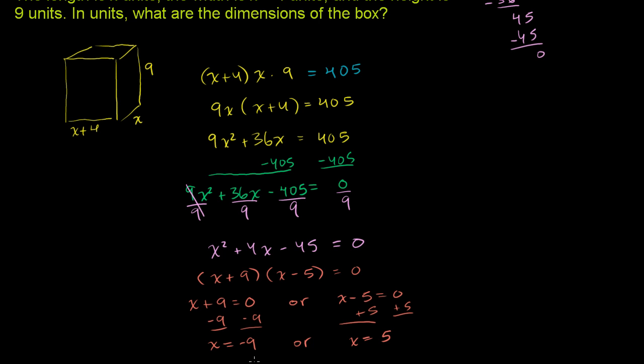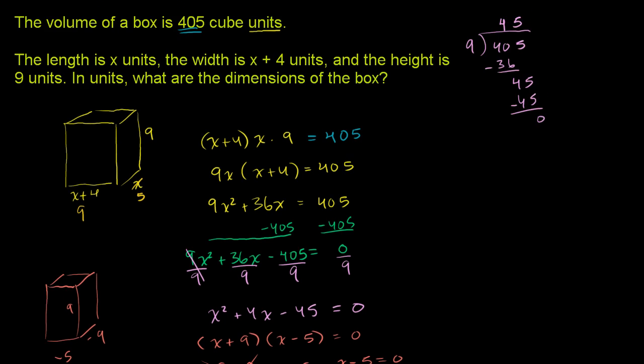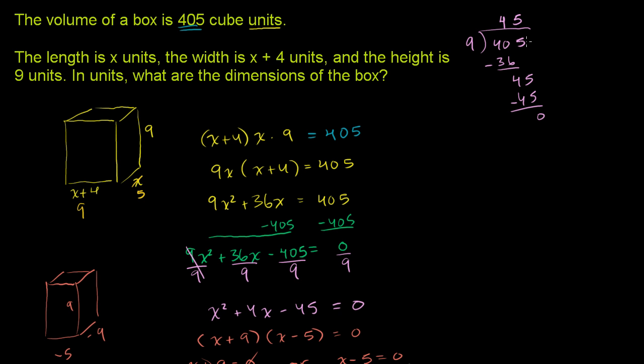If you take x equals negative 9, that won't work. Because if you put negative 9 here, you're going to have a box with a width of negative 5, a length of negative 9, and a height of 9. We don't have negative distances in our reality. So x equals negative 9 isn't appropriate because we need positive dimensions. Let's see what happens with x equals 5. If x equals 5, x plus 4 is 9, and this dimension is 5. That's reasonable. Let's verify this gives a volume of 405. 9 times 5 is 45, times 9 is indeed 405. So we're done.